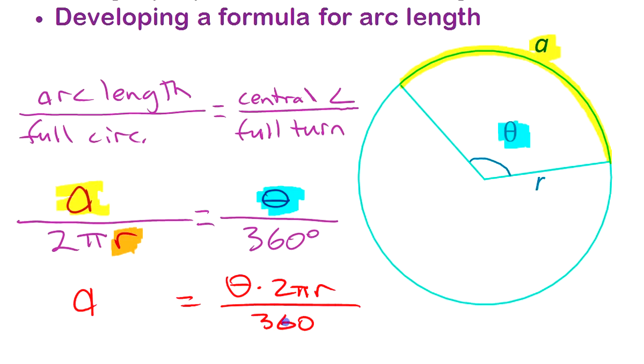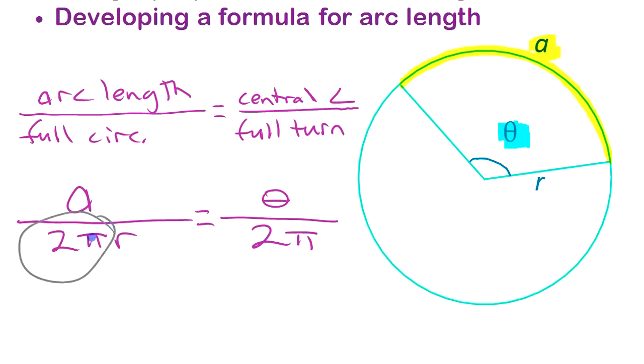But what we're going to do is write the formula in radians because you're going to get a much simpler formula. So let's write something where we're not using that in degrees. We're going to write this in radians. A full turn is 2π radians. Now the reason that this is nice is because on this side we've got 2π on the bottom because it's part of how you find the circumference, and we have 2π over here.